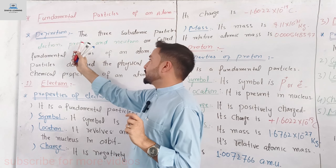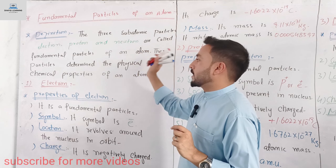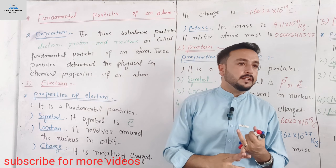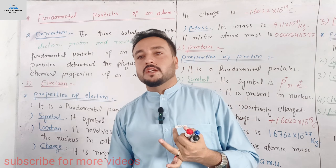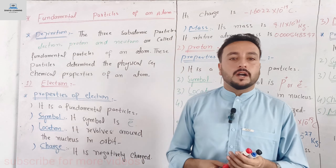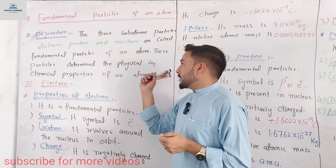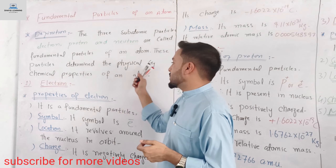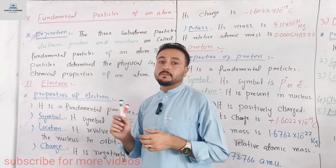Electron, proton, and neutron are called fundamental particles. Why are they called fundamental particles? Because these particles determine the physical and chemical properties of an atom.